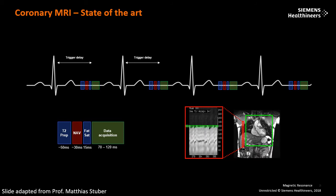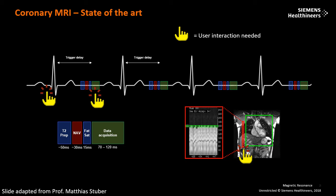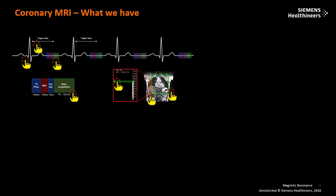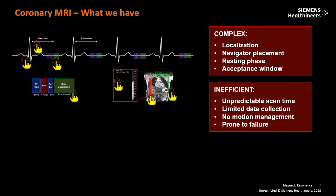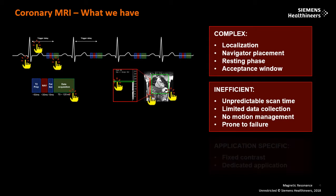An acceptance window is set up to only keep data points acquired at end expiration. As one can very well imagine, user interaction is needed in all stages of the planning — from the placement of the field of view and the navigator to the definition of a trigger delay, the acquisition window, and the acceptance window. Not only does setting up such a complex scan require a lot of expertise, requiring an expert user at the console, but the scanning itself is very inefficient because the navigator means intrinsically an unpredictable scan time. Triggering and gating mean that only 5% of the whole scan duration is actually acquired data, and the scan is prone to failures because the breathing pattern could change during acquisition.